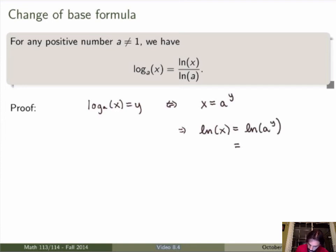And now remember that by properties of the logarithm, the logarithm of something to the exponent is the same thing as y times the logarithm of a. So in other words, what I get here is that y is equal to ln of x divided by ln of a. But y is the ln of x in base a, so I just get exactly the statement here, which is the change of base formula.